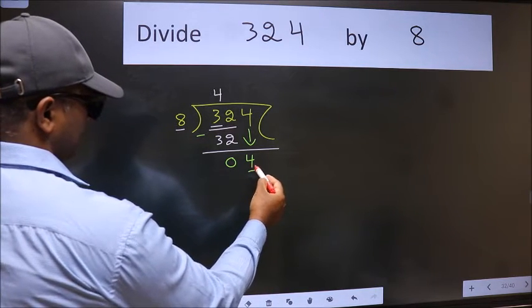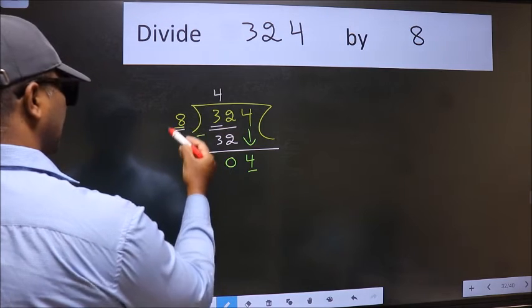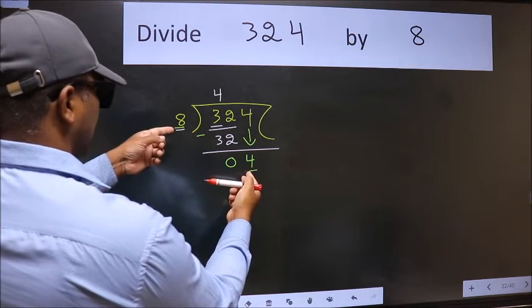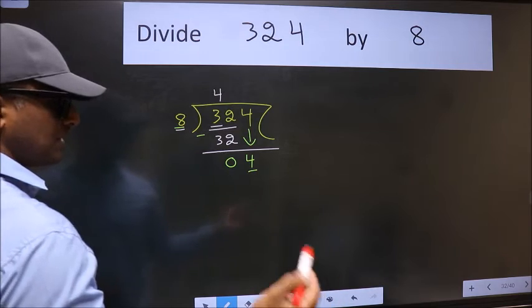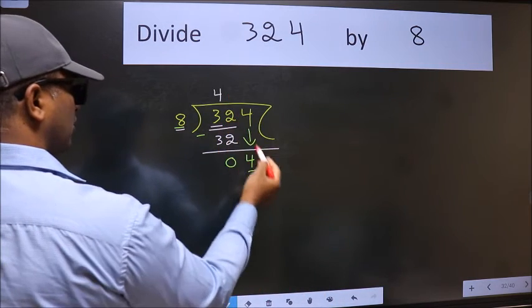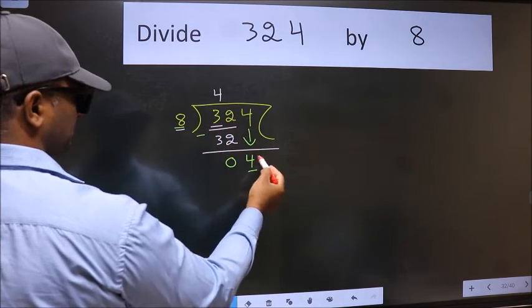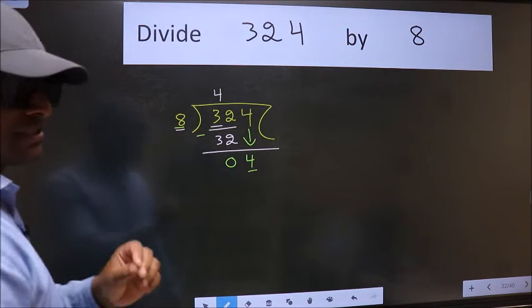Here we have 4 and here 8. 4 is smaller than 8. So what many do is, they directly put dot, take 0. Which is wrong.